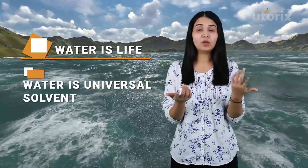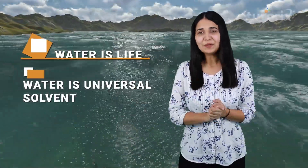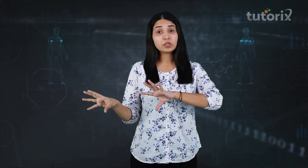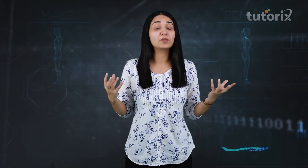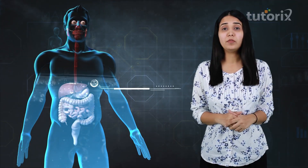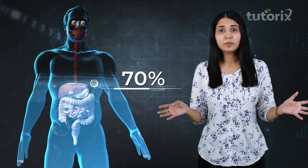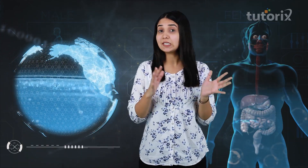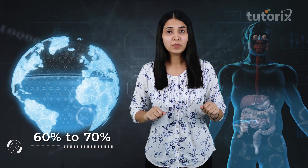Hi guys, we generally hear the statement that water is life, water is the universal solvent, water is actually everything. In today's class we will discuss about the pollution which is related to this amazing liquid, or I will say the amazing universal solvent. If I talk about the human body, our body is made up of about 70% of water, and not just our body — even the earth consists of about 60 to 70% water. And if I talk about the uses, they are endless.